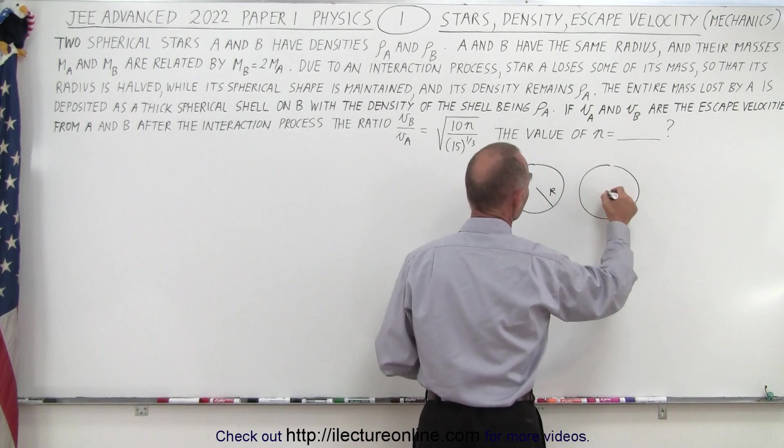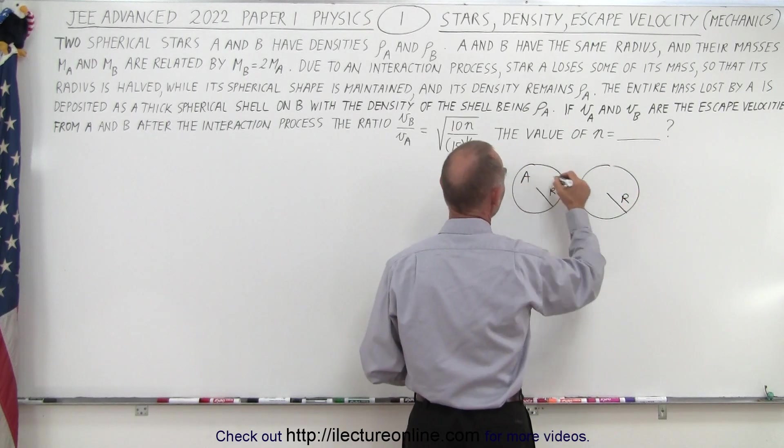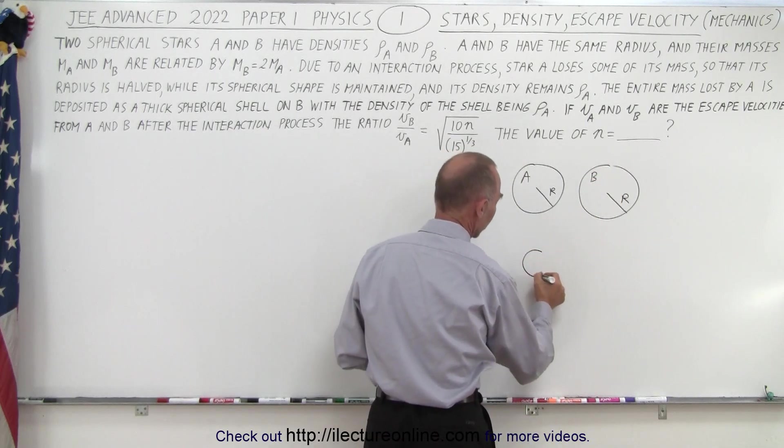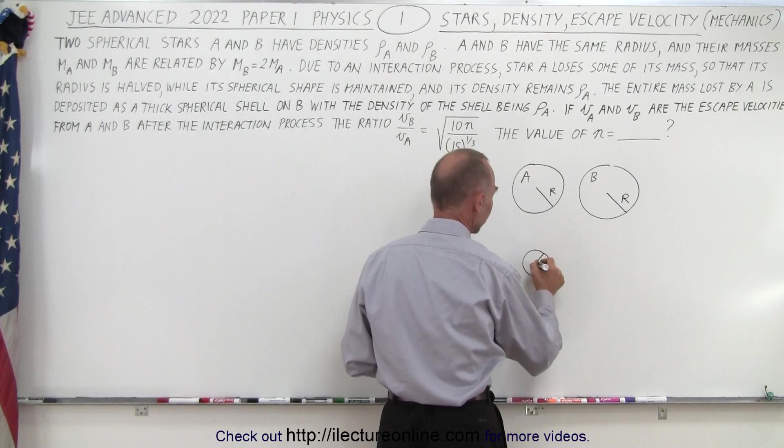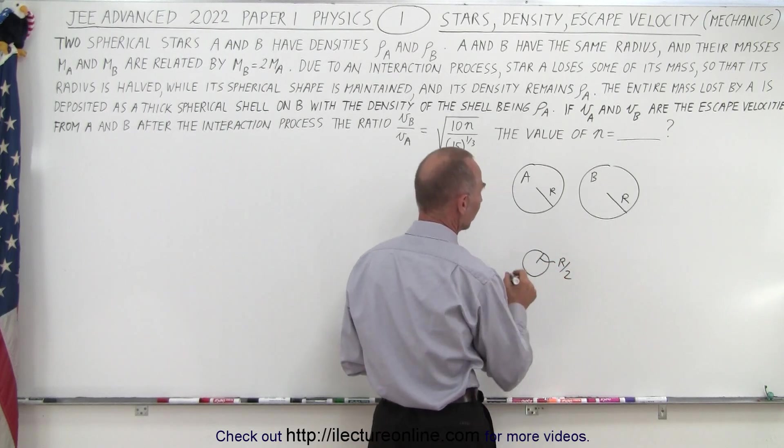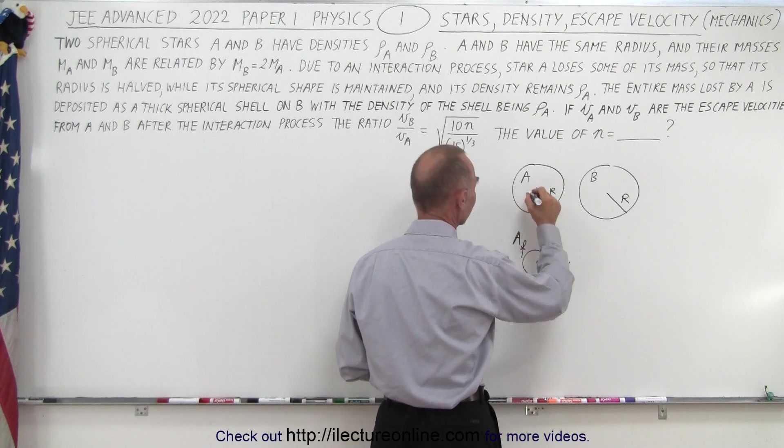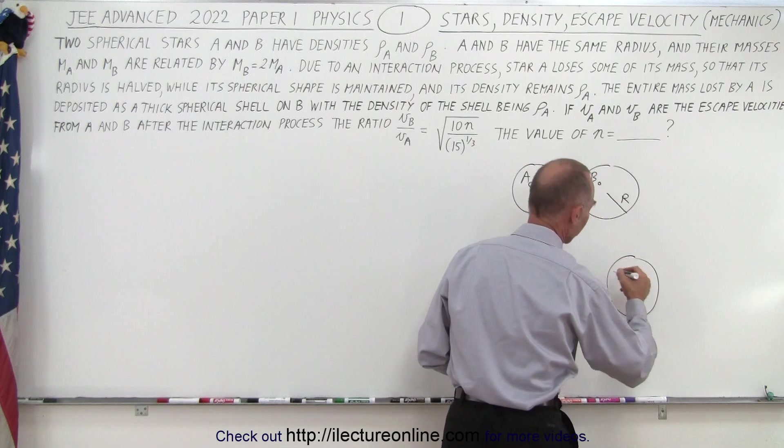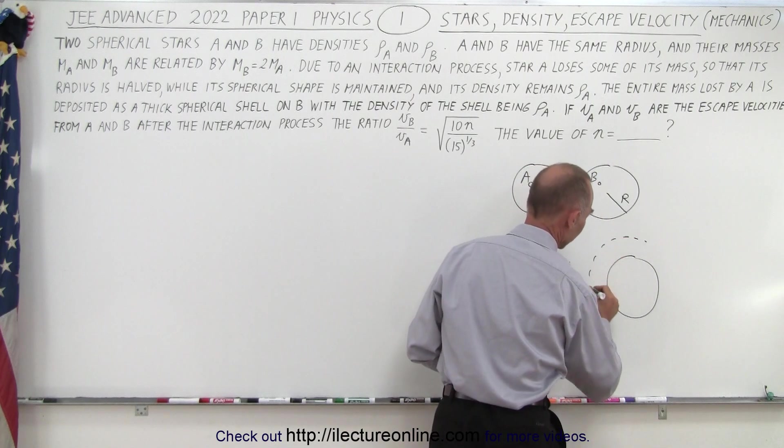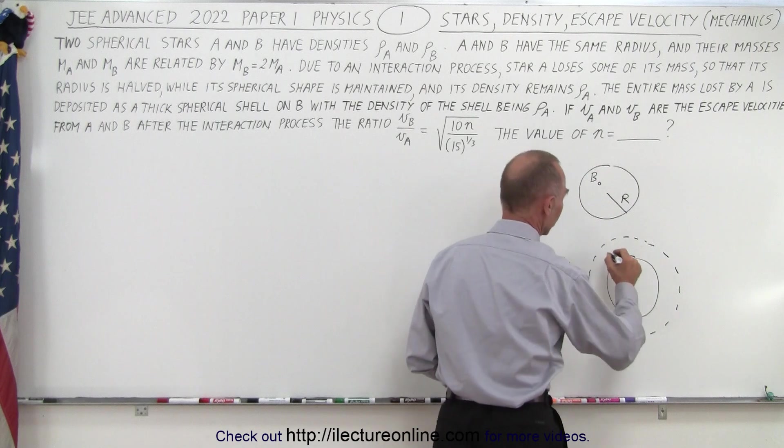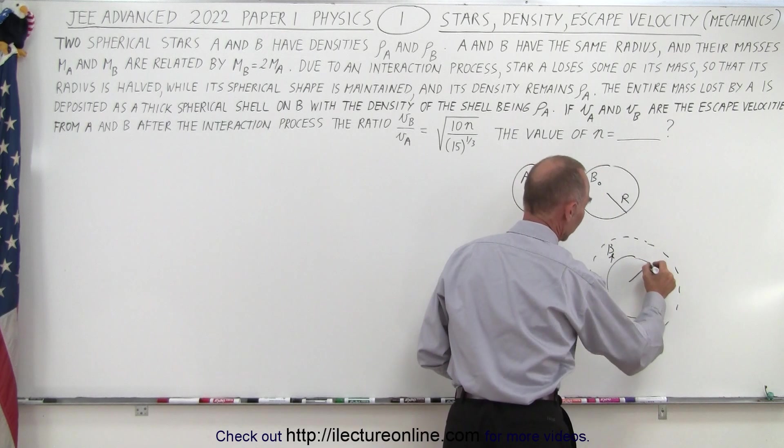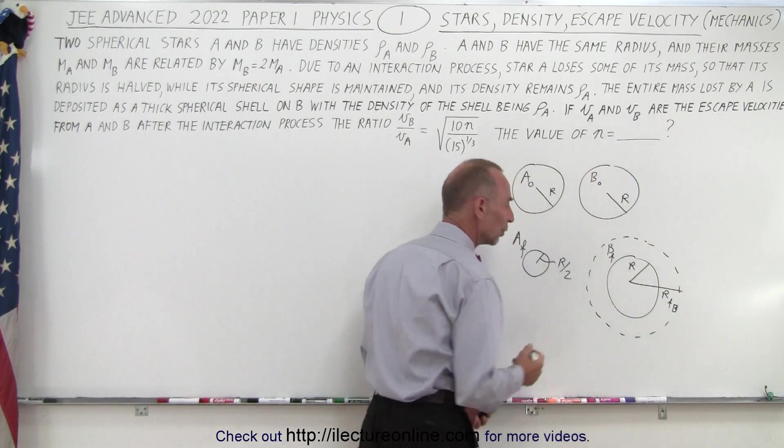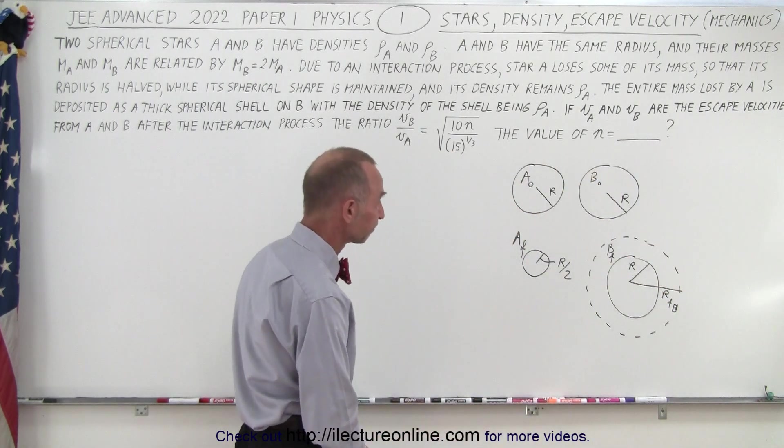So we start out with star A and star B being the same radius, radius R. So here we have star A and star B. Then on the next picture, star A has lost a considerable amount of its mass, so that now our radius is only half of what it was before. So this is A after, we'll call it A final, A initial, B initial. And then B, the star B, has gained that additional mass, and so it now has a spherical shell around. This is now B final, and so this was its original radius, and this is the final radius for B, and of course, we don't know yet what that is.